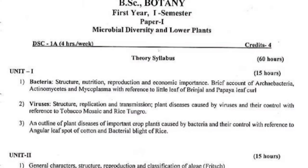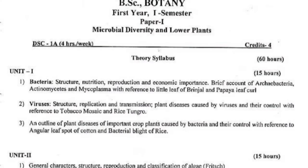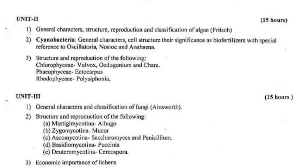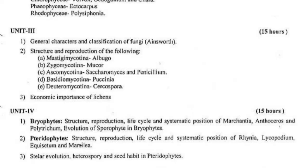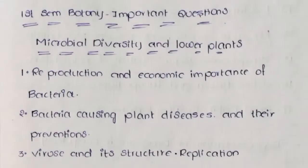Unit 1 is Bacteria. Unit 2 is General Characters. Unit 3 is Classification of Fungi. Unit 4 is Bryophytes. These are important questions in English. First, Botany is the important question — Microbial Diversity and Lower Plants.